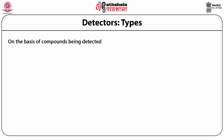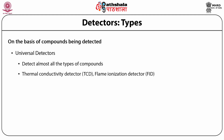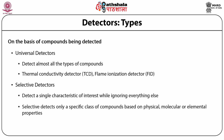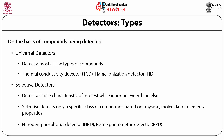On the basis of compounds being detected, gas chromatography detectors can be of two types: universal and selective. As the name suggests, a universal detector can detect almost all types of compounds that elute out in the process — for example, thermal conductivity detector and flame ionization detector. Selective detectors are able to detect a single characteristic of interest while ignoring everything else; they detect only a specific class of compounds based on physical, molecular or elemental properties. Examples are nitrogen phosphorus detector and flame photometric detector.